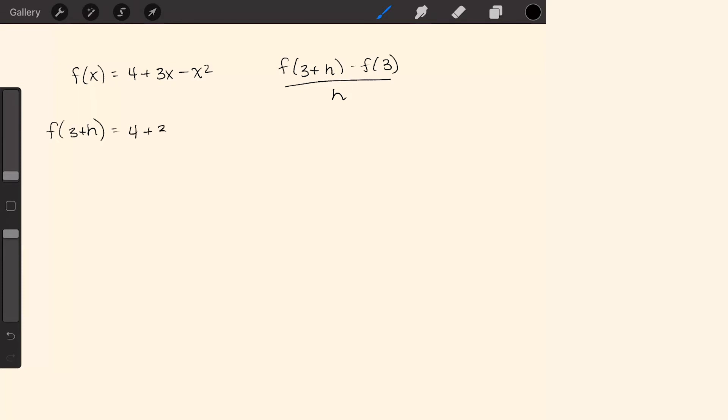We have 4 plus 3 times (3 plus h) minus (3 plus h) squared.